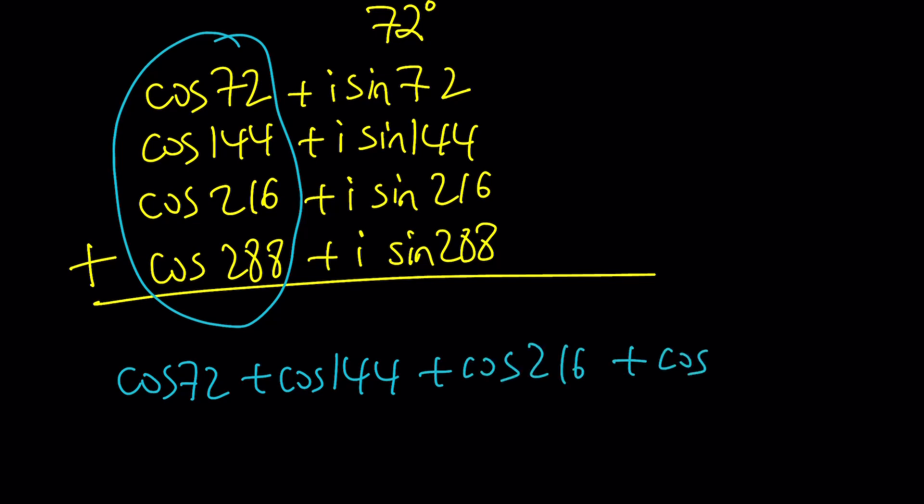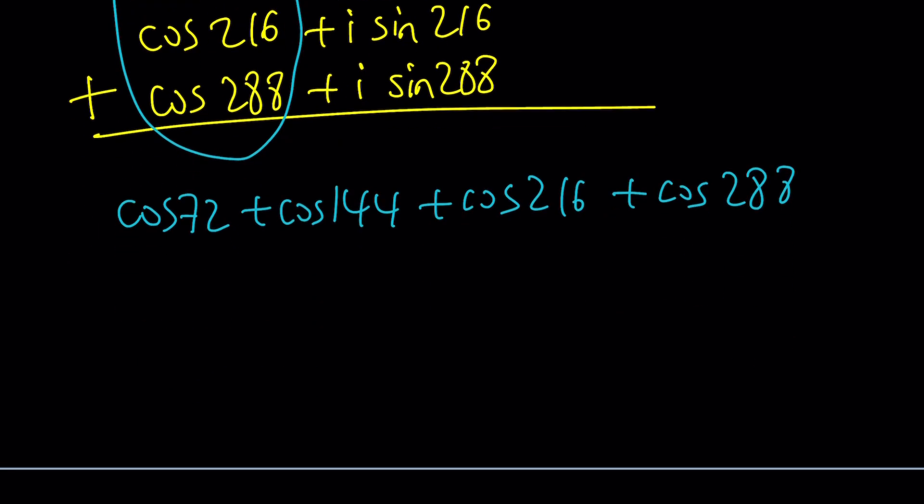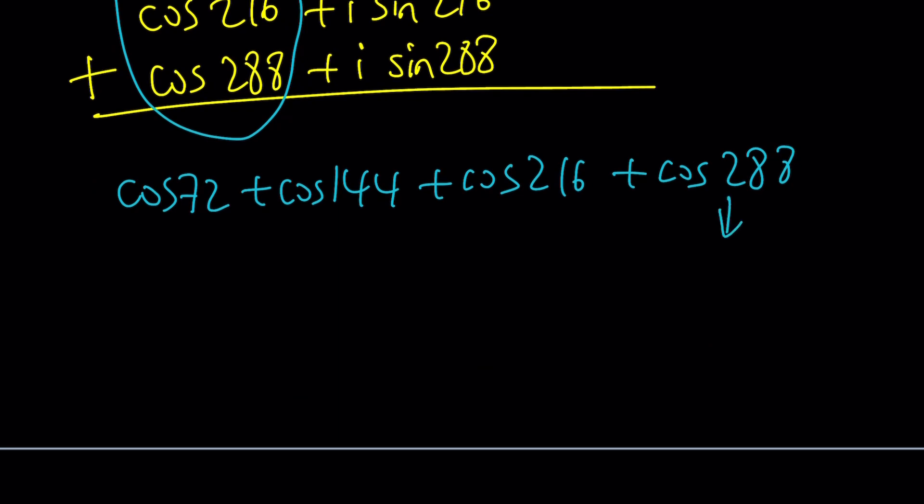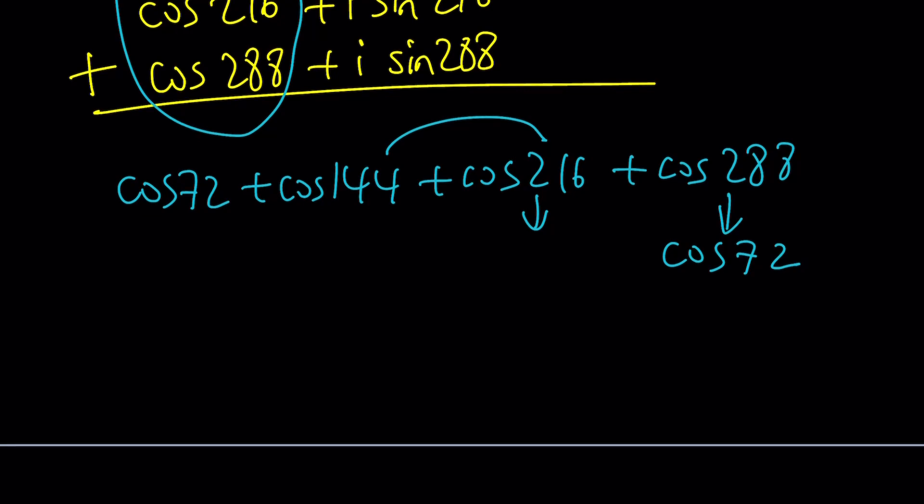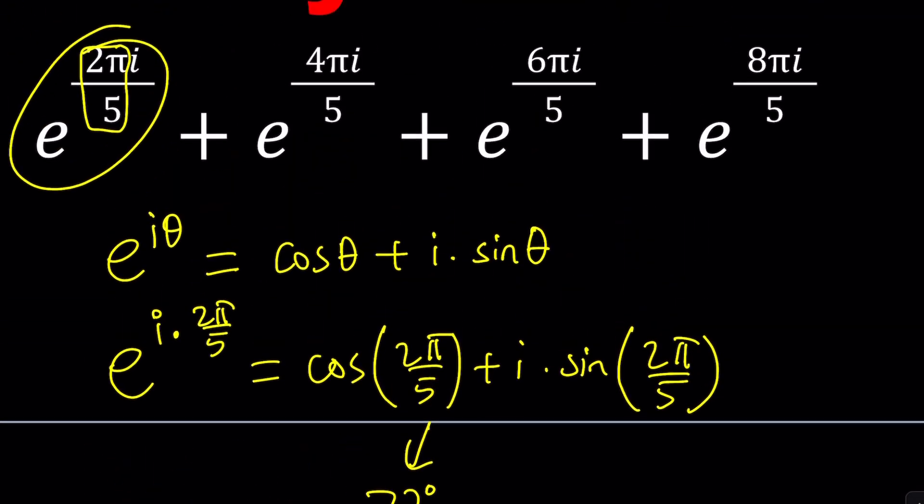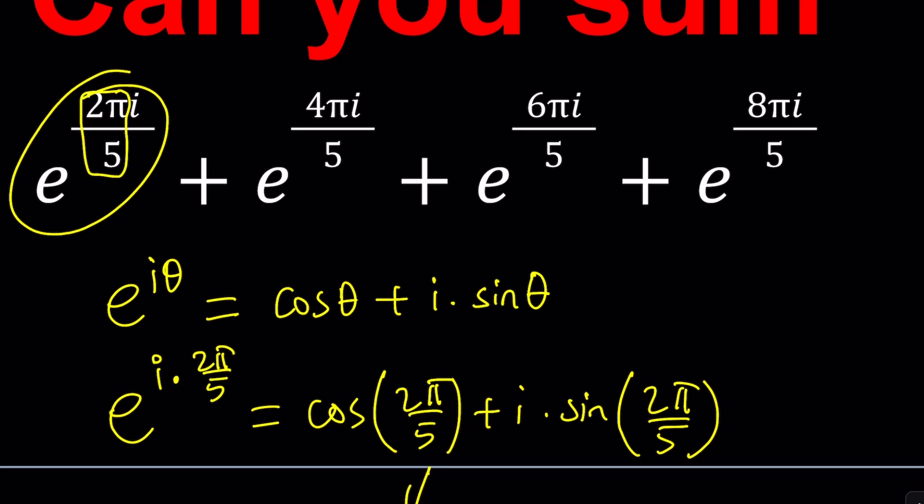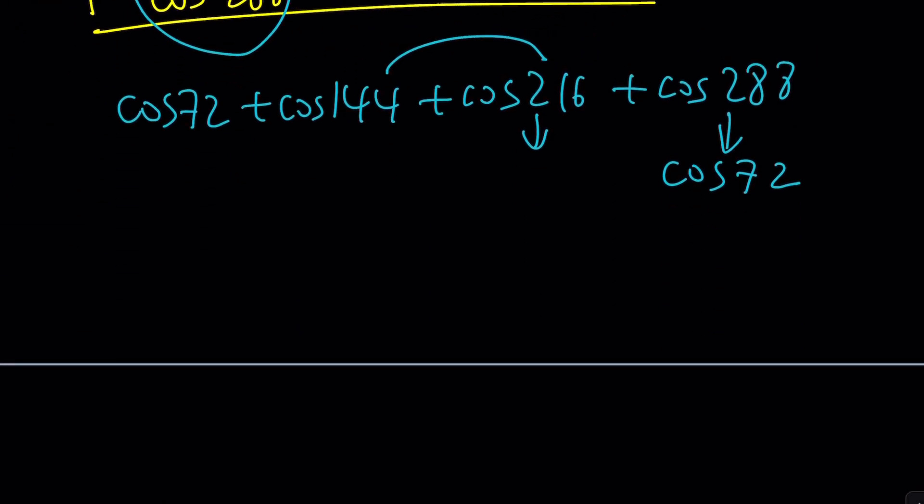By the way, something interesting about this is that cos 288 is actually a cosine of negative 72, and cosine is an even function. So this is the same as cos 72. And the same thing is true for cos 216, because these two add up to 360. Yeah, they do. I wasn't sure. But probably in radian form, that's easier to see, 10π over 5. Exactly. Sometimes radians are good.